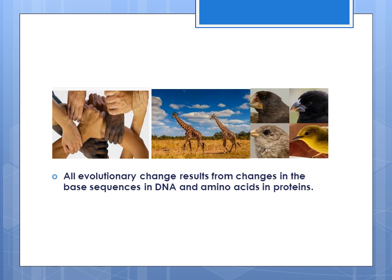The genetic code shows us how the DNA specifies which amino acids are in the protein. The genetic code specifies a three-base-long sequence of DNA, also known as a codon, that tells the cell which amino acid to use. When this genetic code changes, the amino acid it specifies will change, and in this way the change in DNA leads to a change in the protein.